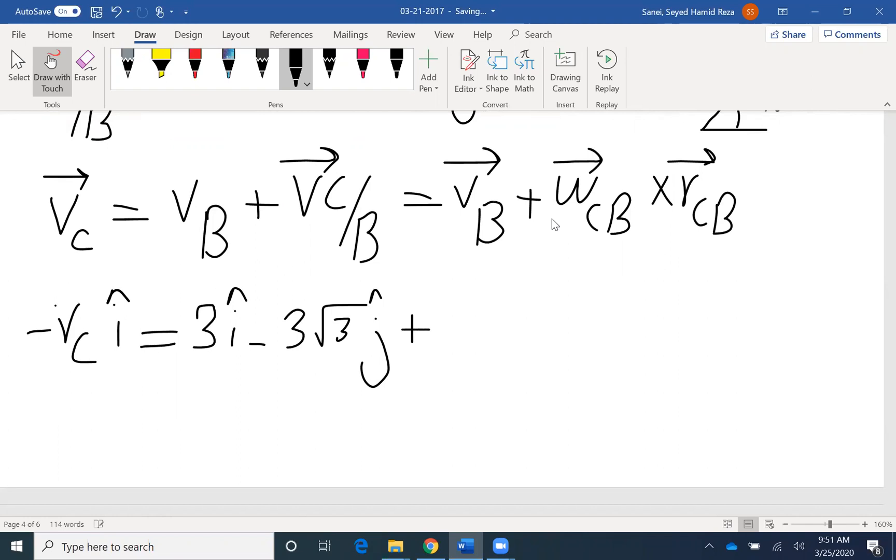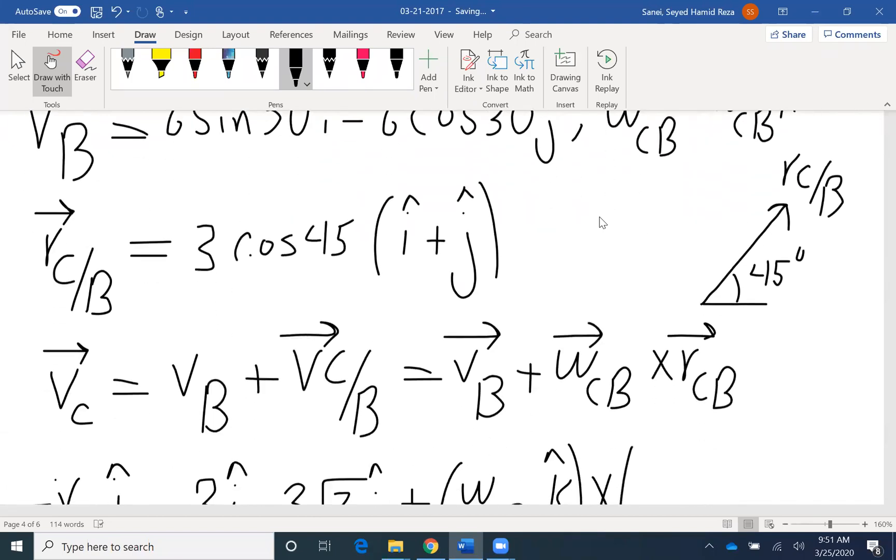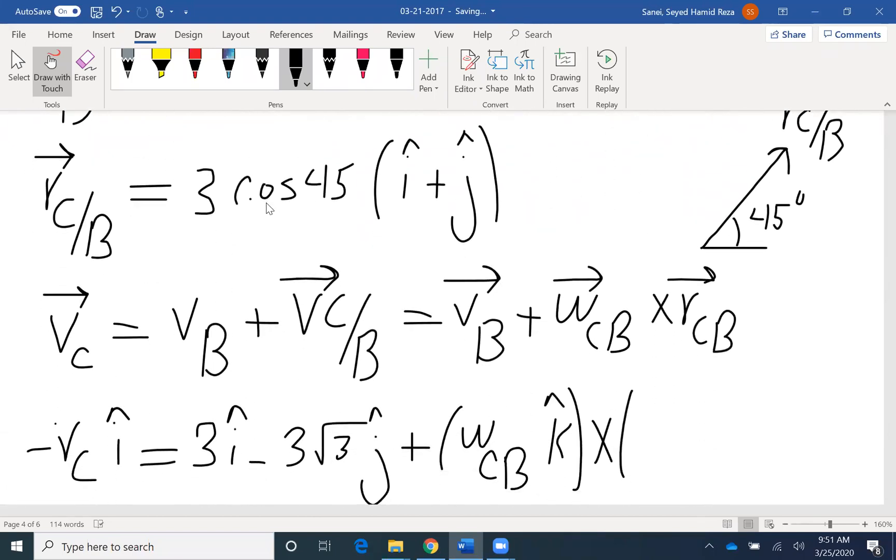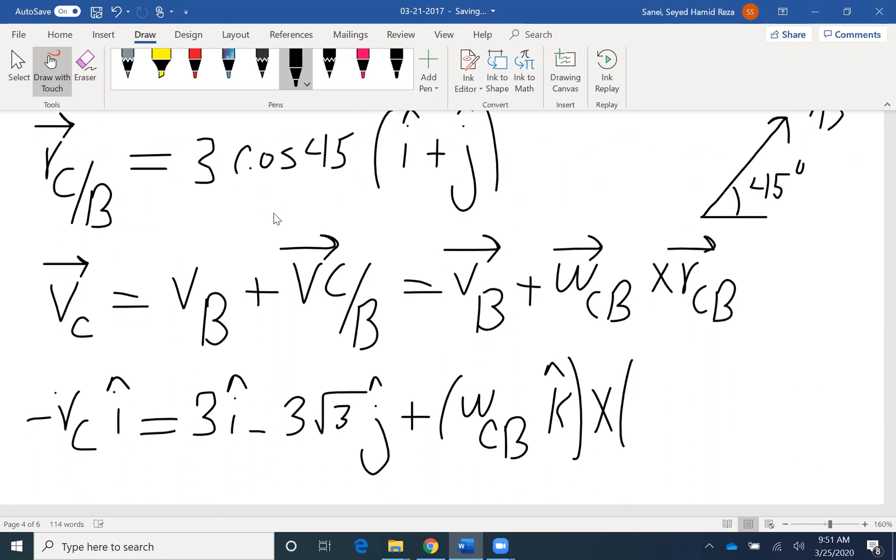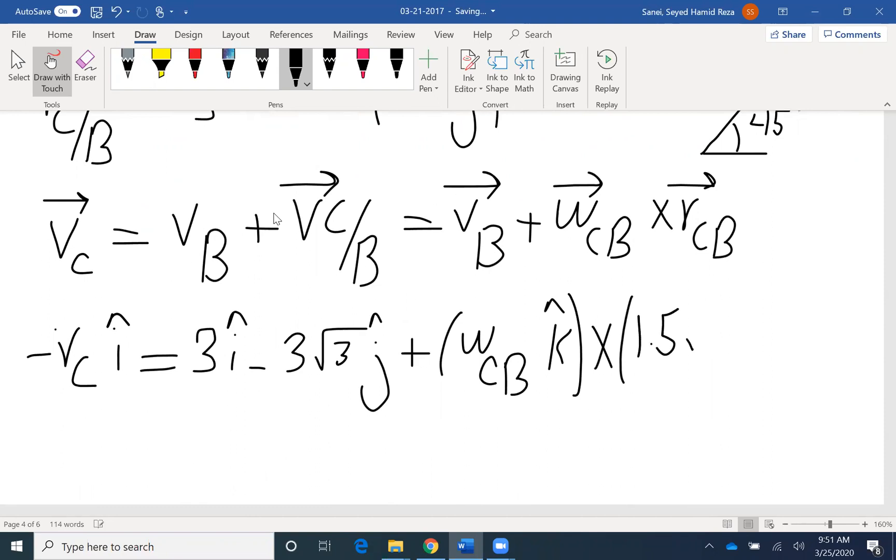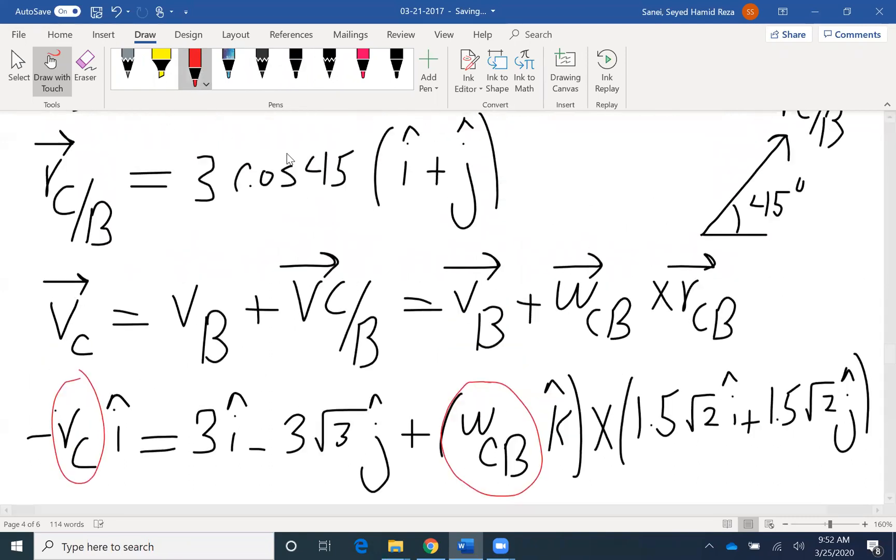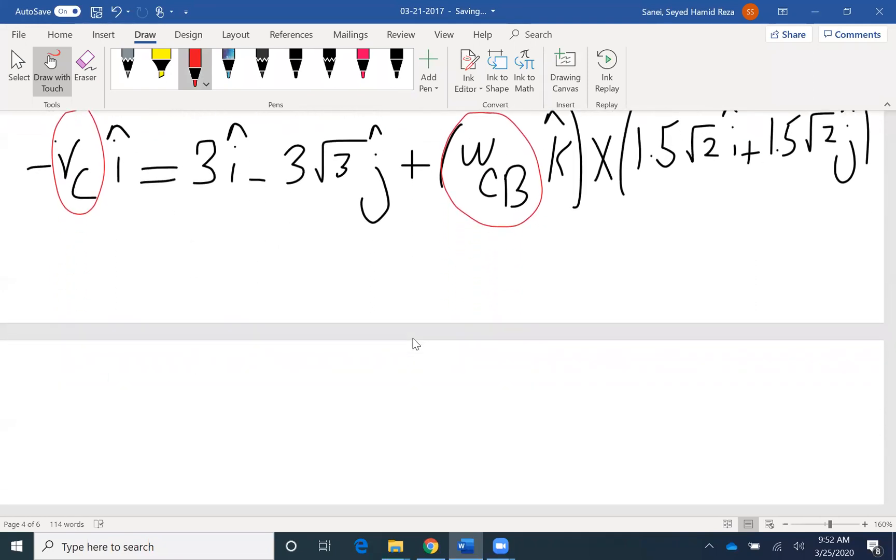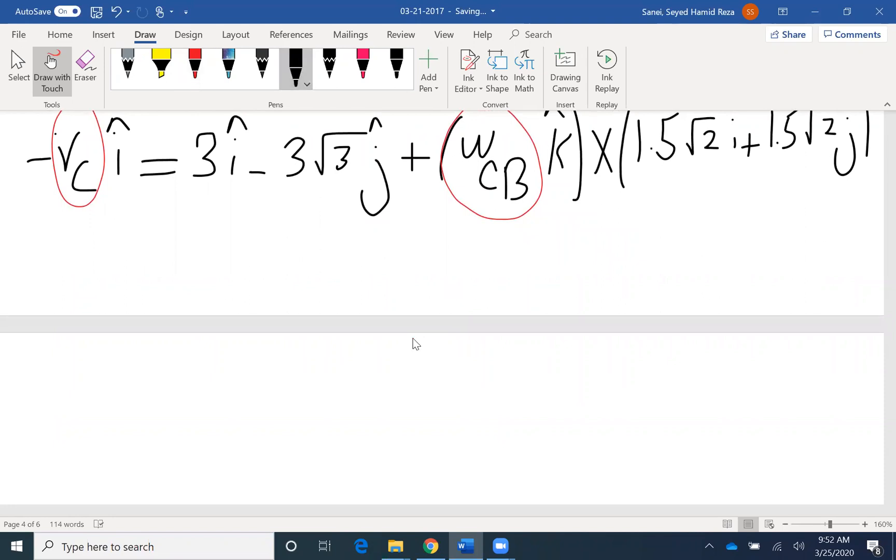So I need to go to omega CB. I don't know the magnitudes, so I just write omega CB K cross RCB. RCB is here. This one is square root of 2 over 2, so that would be 1.5 square root of 2I and the same thing for J. In this equation, I have two unknowns. One is omega CB. That's the unknown. The other one is velocity VC that I need to find. It's a vector, so that means I have two equations. One for I and one for J.